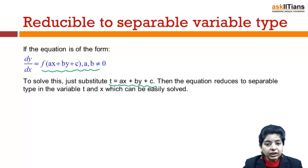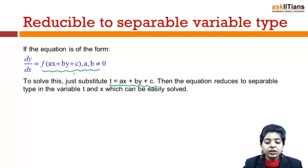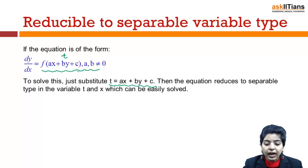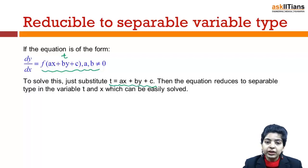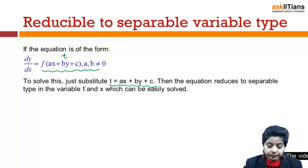Using t = ax + by + c, it will get reduced to the separable variable type in variables t and x, and then you can easily solve as you did in the case of separable variables.